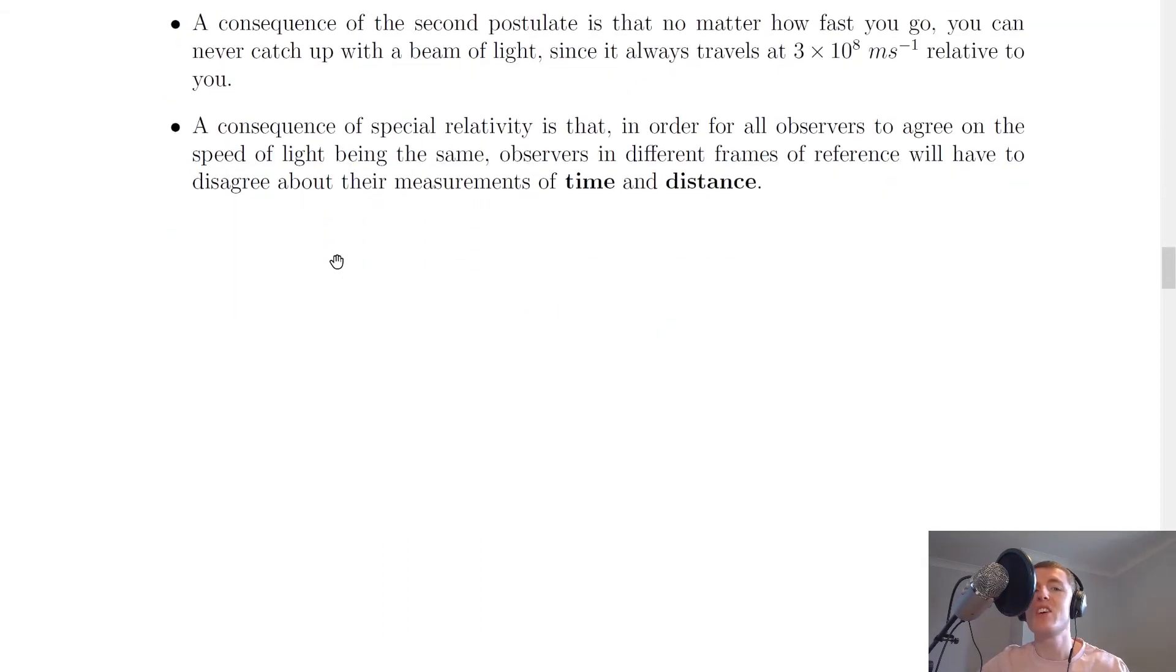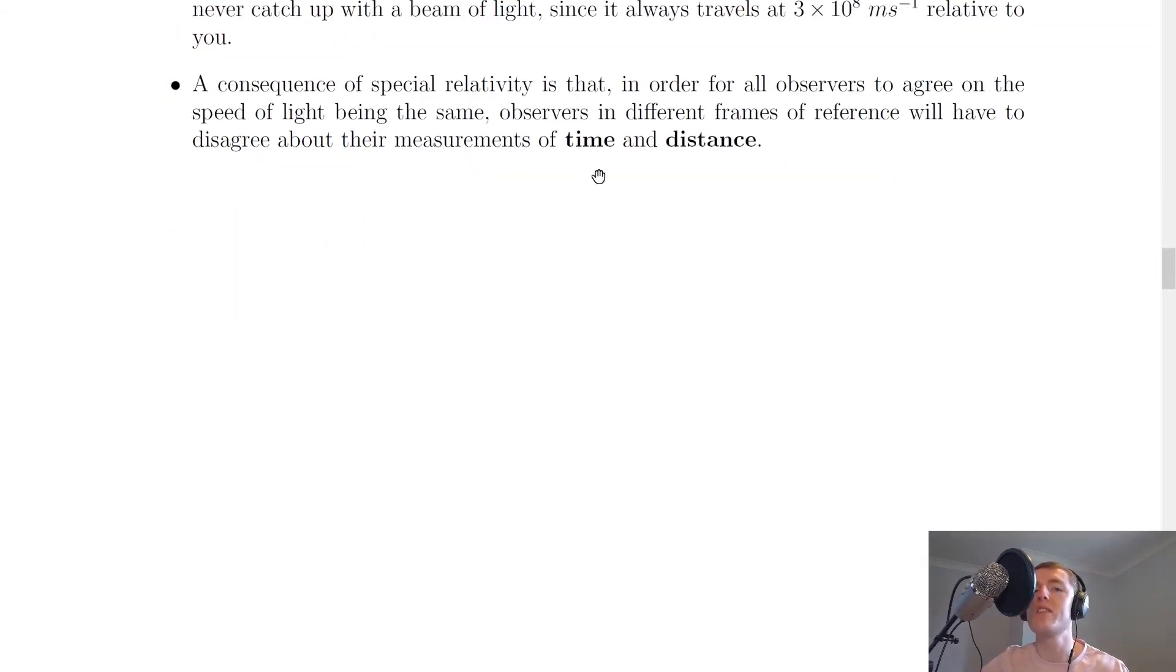So lastly it says here that a consequence of special relativity is that in order for all observers to agree on the speed of light being the same, observers in different frames of reference will have to disagree about their measurements of time and distance. And remember all we mean by frame of reference is someone's point of view from where they are with respect to an event happening.